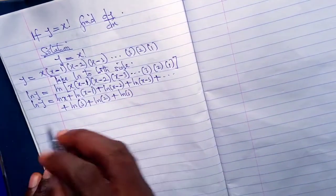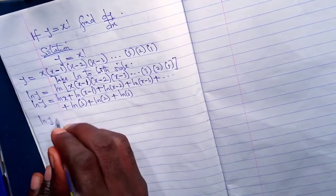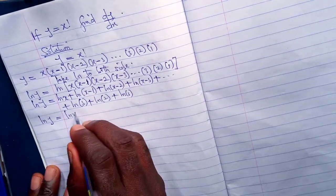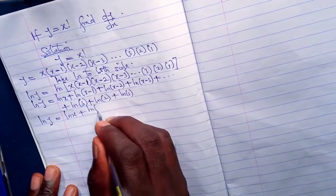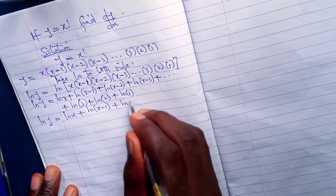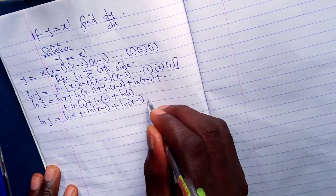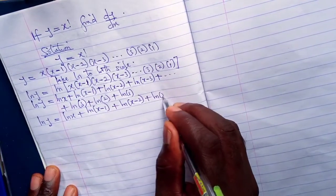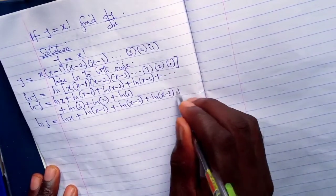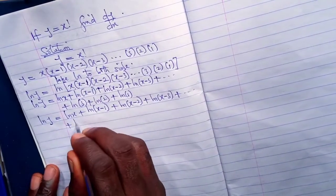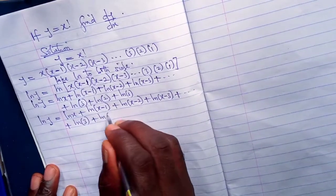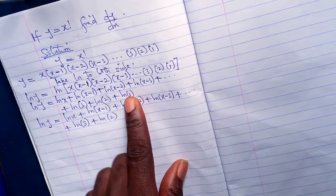We all know that ln 1 is 0, so ln y equals ln x plus ln of x minus 1 plus ln of x minus 2 plus ln of x minus 3 plus dot dot dot.